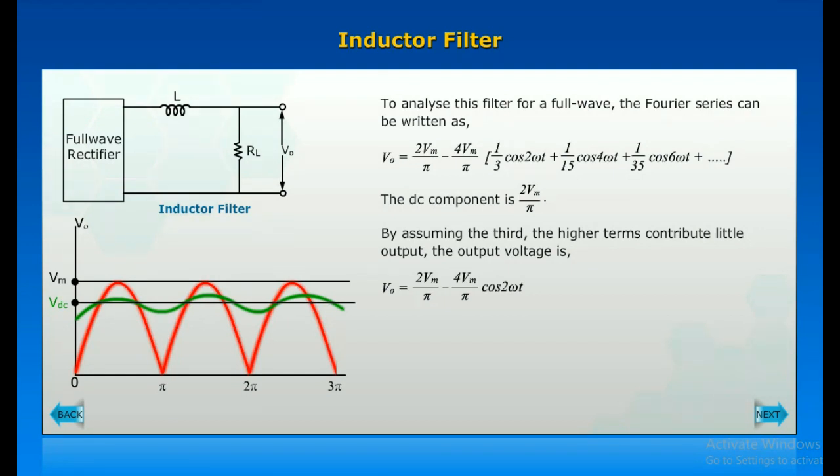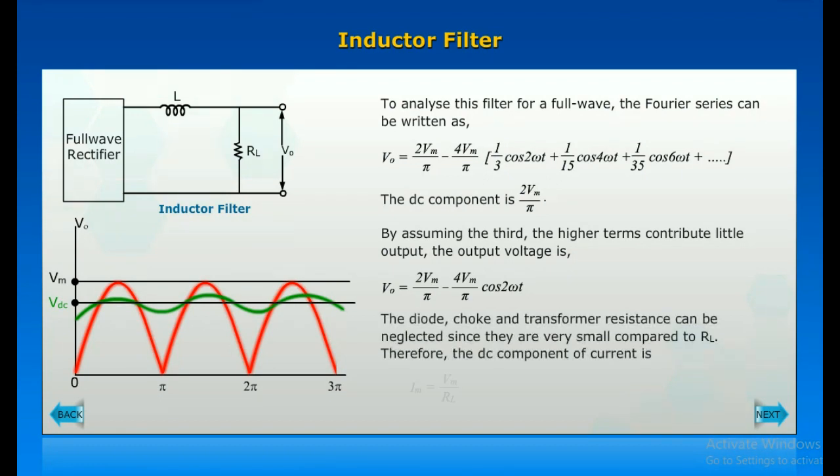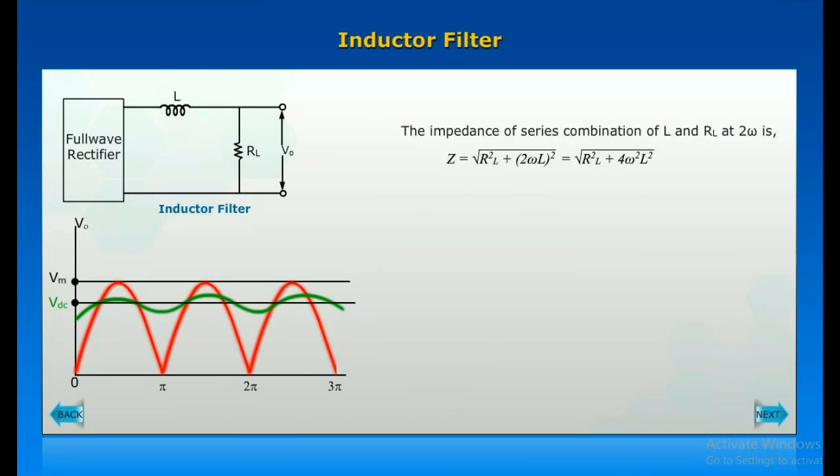The output voltage is given as shown. The diode, choke, and transformer resistance can be neglected since they are very small compared to load resistor. Therefore, the DC component of current is given by the formula. The impedance of series combination of L and R_L at 2 omega is given. Therefore, the AC component is calculated.